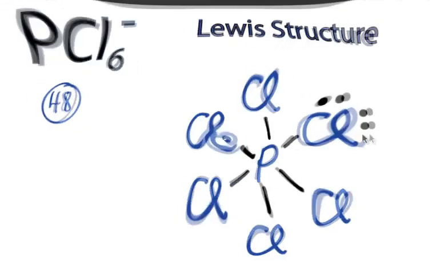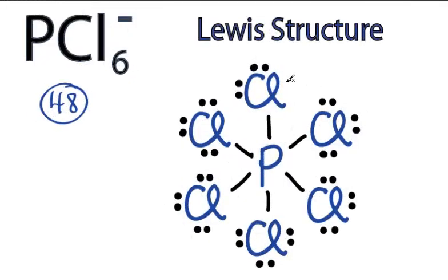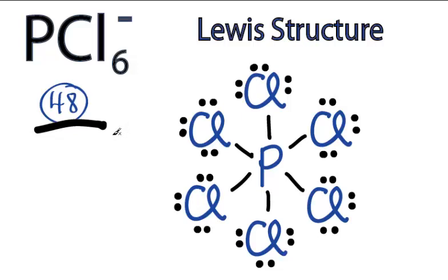There are 48 total valence electrons used. So we've used all our valence electrons, and all of the chlorines have octets. The phosphorus has more than 8 valence electrons, but it's below row 2 of the periodic table, so it can have an expanded octet.